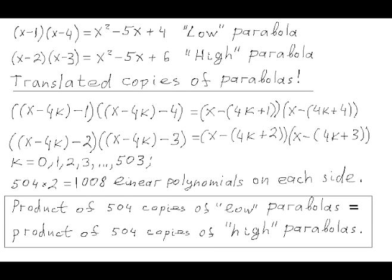We can also consider more translated copies of these parabolas if we shift four units to the right multiple times. The formula for that is the same quadratic polynomial in which x minus 4k is substituted for x, where integer k equals 0, 1, 2, 3, etc., up to 503.